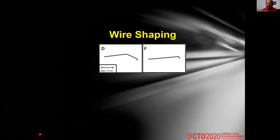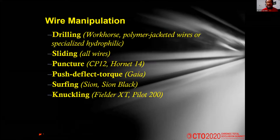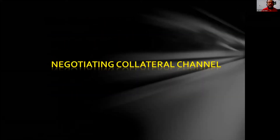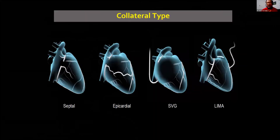Correct wire shaping: it could have only one bend near the tip for penetration, and two bends when you want to guide — one near bend and one three centimeters from the tip. Wire manipulation through the CTO body involves drilling, sliding, puncture, push-deflect, torque by Gaia, and surfing. Sometimes you don't see the collaterals, so you need to surf with Sion Black or Pilot, and knuckling.